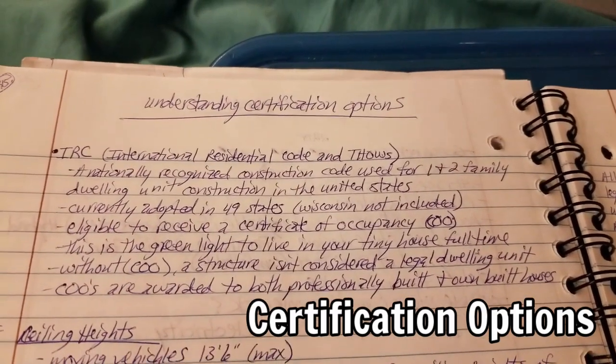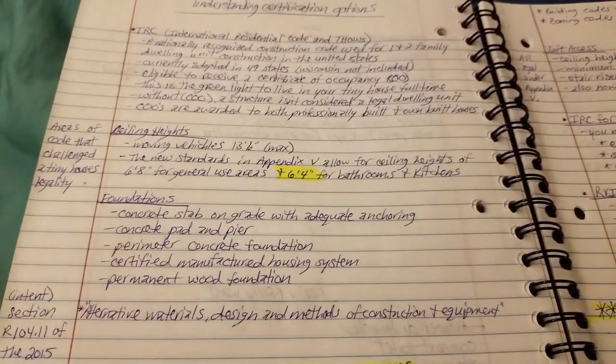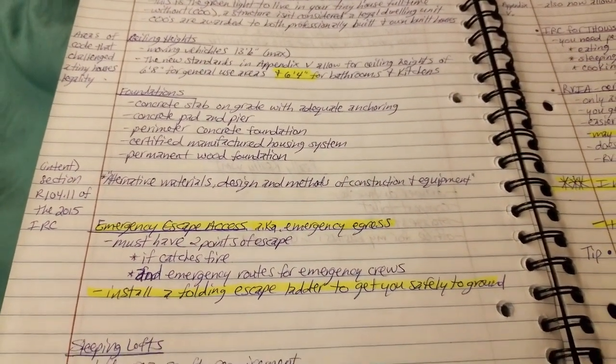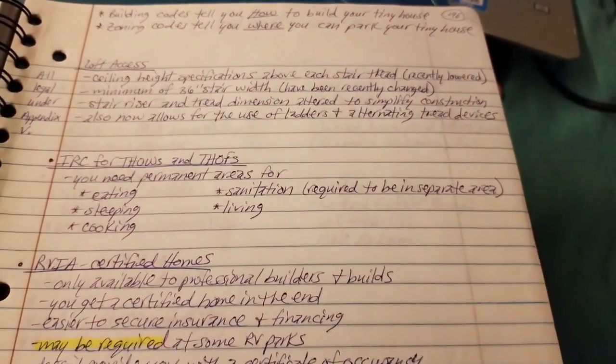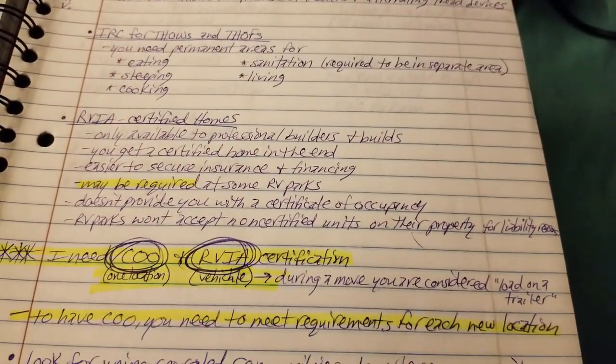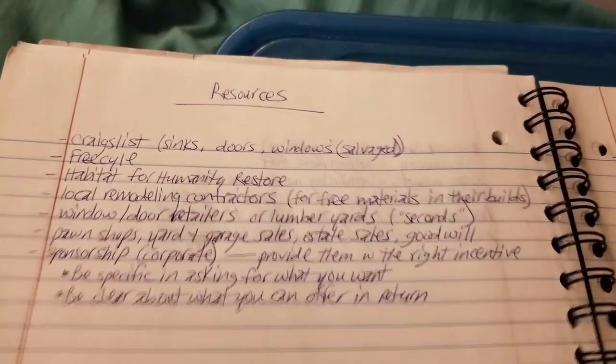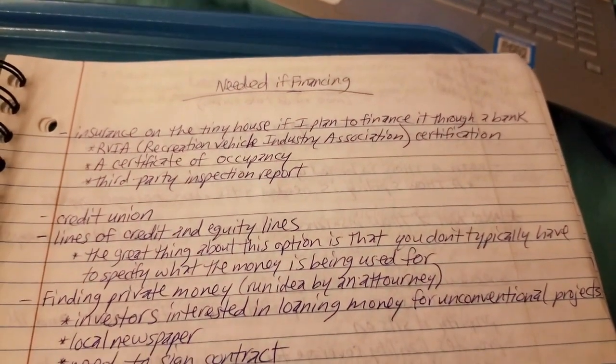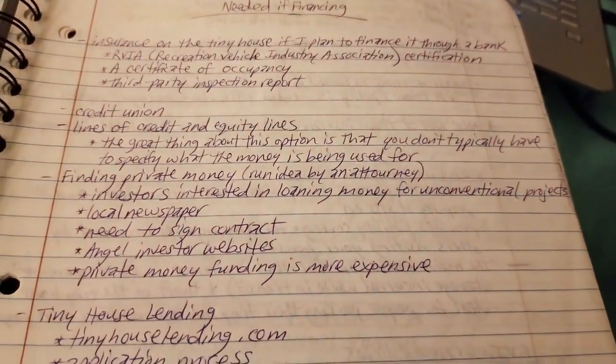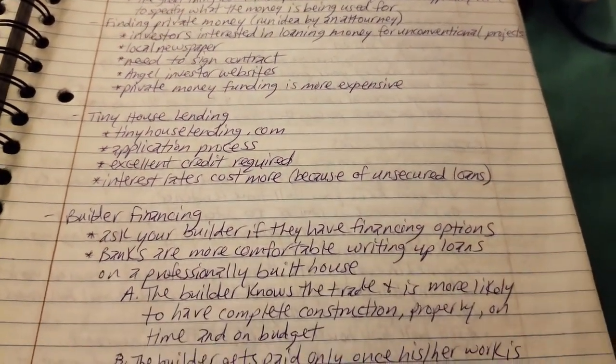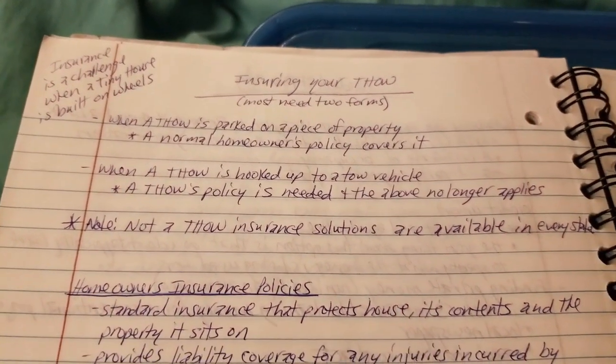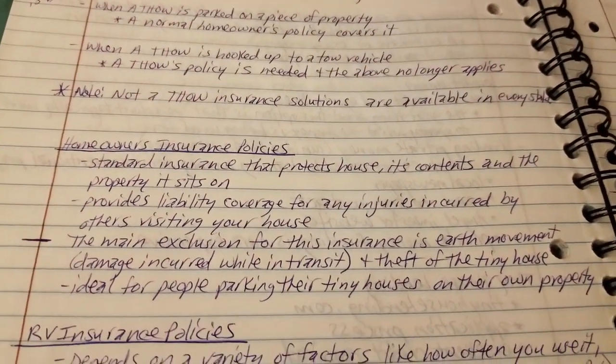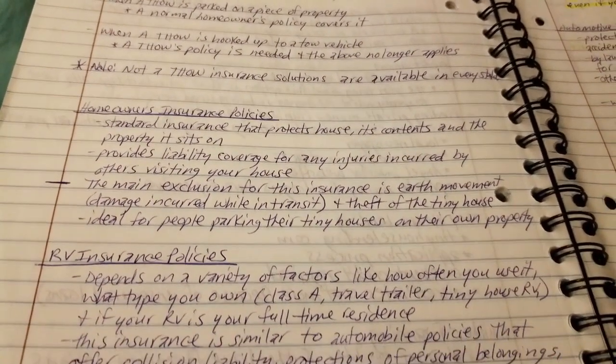Now we're moving on to certification. I wanted to make sure what was I going to have to abide by with certain rules and certain codes and certain certifications. A little more on resources. I needed if I was financing - all these things that I wrote down was in case I financed. Insuring it, rather than just the companies of who I would call. What does it entail? How much can I insure? What's the policy like?